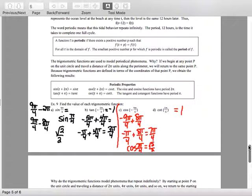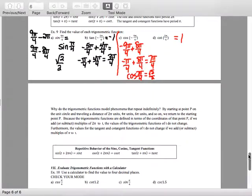All right, last page, home stretch. Why do the trigonometric functions model phenomena that repeat indefinitely? By starting at a point P on the unit circle and traveling the distance of 2π or even 4π, 6π, you get back to the exact same point on the unit circle. So that's why we have the repetitive behavior infinitely many times if we let n be any integer.